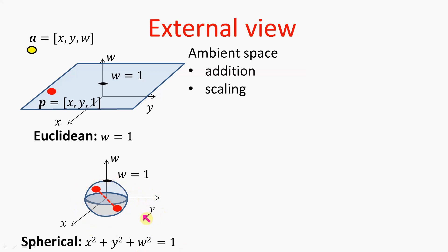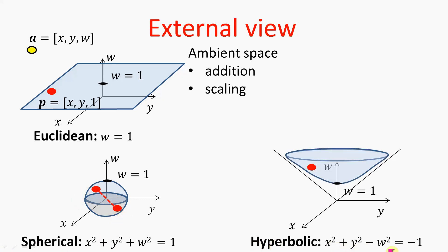We recall that in spherical geometry, instead of a full sphere, we in fact have just a whole sphere because points are diameters — or in other words, opposite points, also called antipodal points, are equivalent. Hyperbolic geometry can also be embedded in this three-dimensional ambient space as a one-sheet hyperboloid, having the following equation.